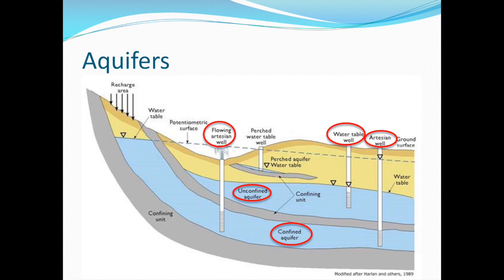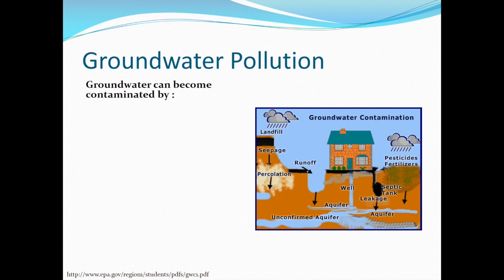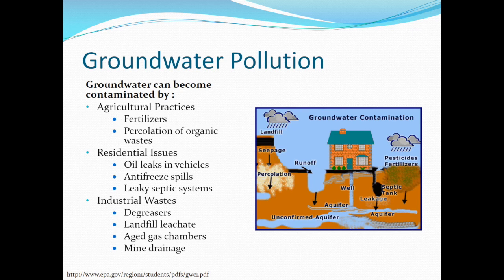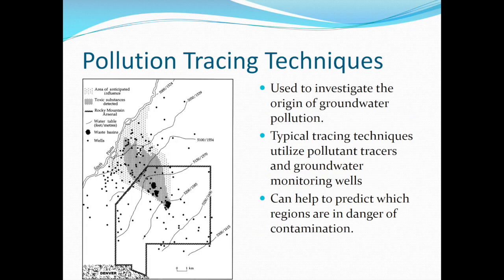Looking at this diagram, how do you think groundwater becomes contaminated? Groundwater pollution comes from three main sources: agricultural practices, residential issues, and industrial wastes. Agricultural pollutants include fertilizers and organic wastes. Residential pollutants include oil leaks, anti-freeze spills, and leaky septic tanks. Industrial wastes include degreasers, landfill leachates, aged gas chambers, and mine drainage. With so many possible pollution sources, how do we know the pollution source when groundwater becomes contaminated? Knowing the source of pollution is important for remediating the problem, so pollution tracing techniques are applied.